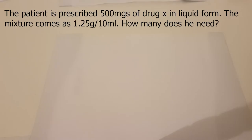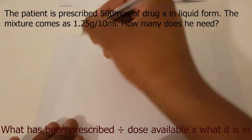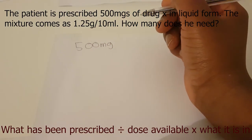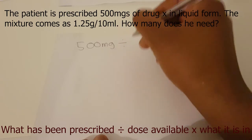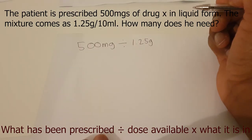Next question: the patient is prescribed 500 milligrams of drug X in liquid form. The mixture comes as 1.2 grams in 10 mils. How many mils does the patient need? Using the same formula — what has been prescribed divided by the dose available multiplied by what it is in — the patient has been prescribed 500 milligrams. We divide by the dose available, 1.25 grams, then multiply by 10. However, can anyone spot the error here if we were to give this as our final answer?